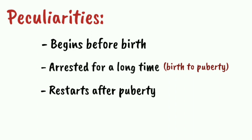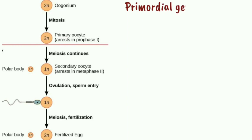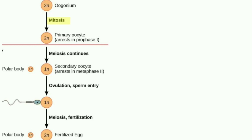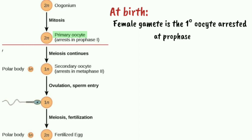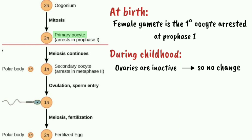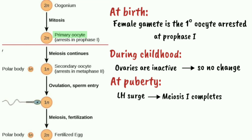It restarts after puberty. The primordial germ cells give rise to the oogonium. By repeated mitotic division, the oogonium forms the primary oocyte which is diploid. This primary oocyte undergoes meiosis one but it is arrested in the prophase of meiosis one, in the diplotene state. During childhood the ovaries are inactive. At puberty, there is an LH surge prior to ovulation, which causes meiosis one to complete.